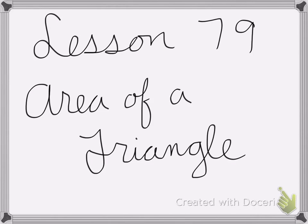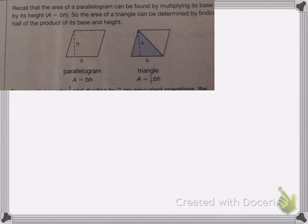All right, so lesson 79 is on the area of a triangle. So here, we show how to find the area. If you remember, a triangle is half of a parallelogram. So if the area of a parallelogram is base times height, that means if I find half of the base times the height, I get the area of my triangle.